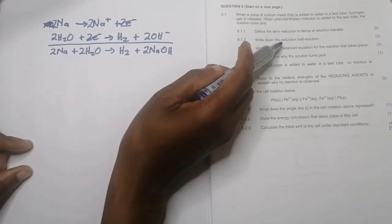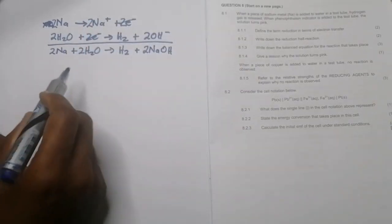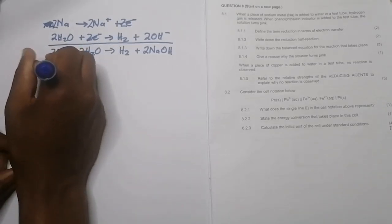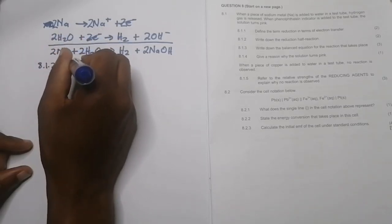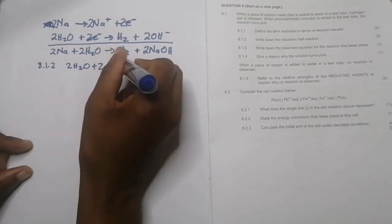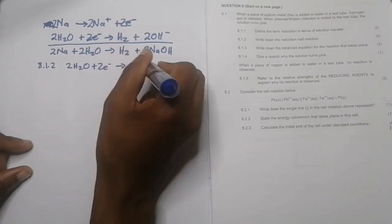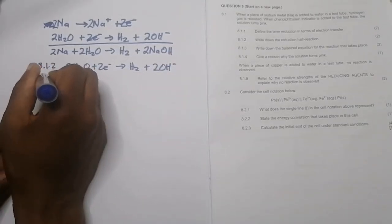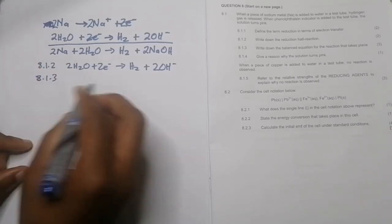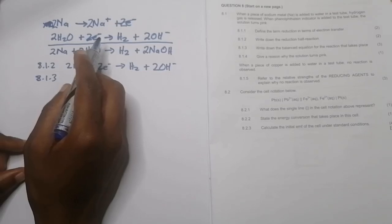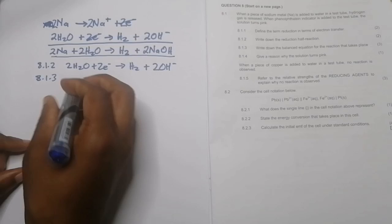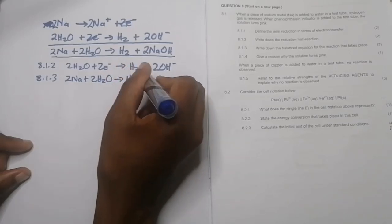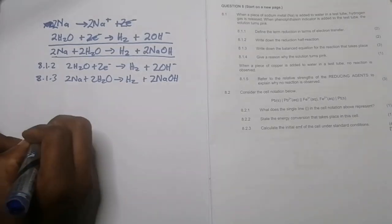So they say, write down the reduction half reaction. Remember, reduction half reaction in this case, it's the gain of electrons. So it's this one. Electrons are in the left hand side. So to answer 8.1.2, that would be the reaction 2H2O plus two electrons gives us H2 plus 2OH minus. We got that from the standard reduction potential table. 8.1.3, they say write down the balanced equation for the reaction that takes place. Well, guess what, we've already gotten that. So 2Na plus 2H2O will give us hydrogen and it will give us two sodium hydroxide.